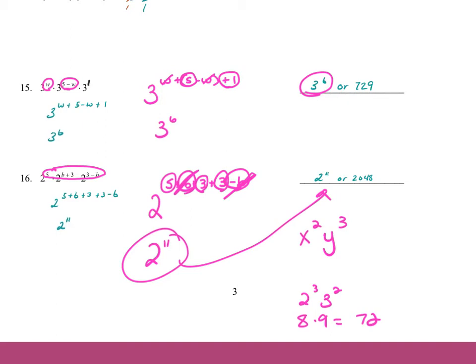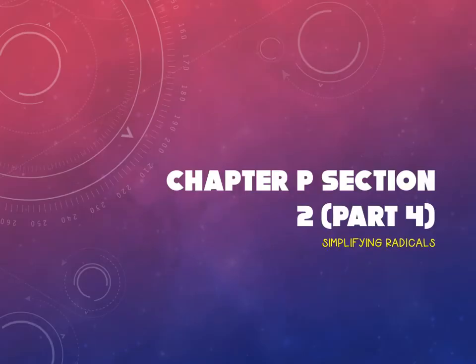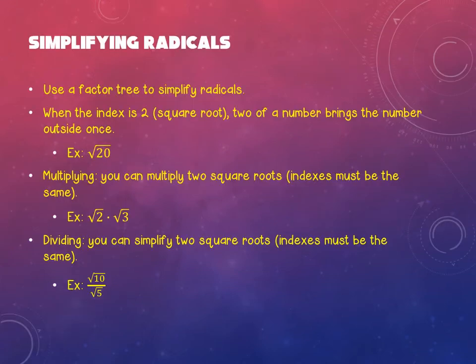We are going to get started with the notes. Part 4 of P2 — longest section ever — which is radicals. Again, something that hopefully you've seen before; this should be review, but don't panic if it's not, because we're going to go through it. We've got quarantine brain, which means we haven't really remembered anything. You can start the homework tonight — it won't be due till Wednesday because we won't finish the notes till tomorrow. So, simplifying radicals: to simplify a radical, we're going to use a factor tree, which we did a little bit in last week's notes, but they're going to get a little bit jazzier.